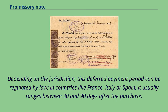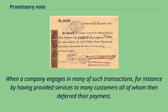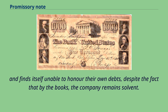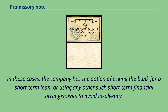Depending on the jurisdiction, this deferred payment period can be regulated by law. In countries like France, Italy, or Spain, it usually ranges between 30 and 90 days after the purchase. When a company engages in many such transactions — for instance, by having provided services to many customers who deferred their payment — it is possible that the company may be owed enough money that its own liquidity position is hampered and it finds itself unable to honor its own debts, despite remaining solvent by the books. In those cases, the company has the option of asking the bank for a short-term loan or using other short-term financial arrangements to avoid insolvency.